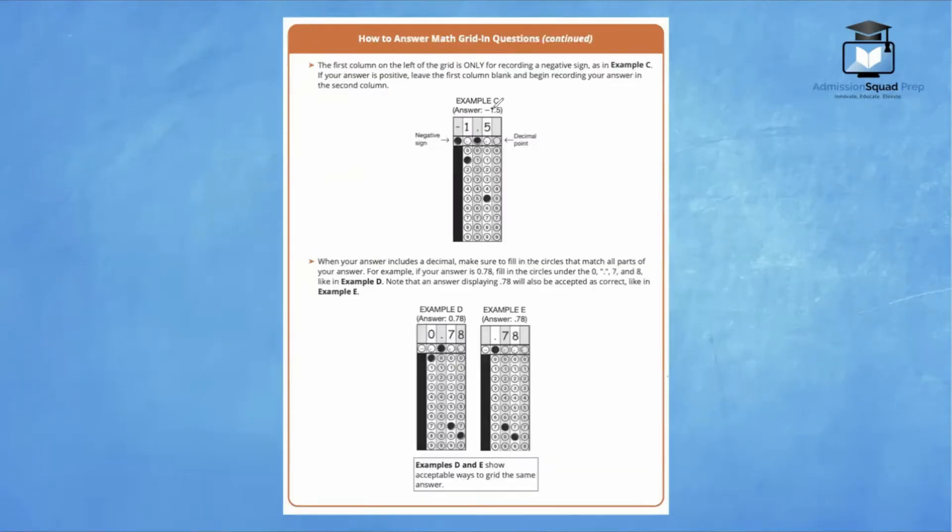The first column on the left of the grid is only for recording a negative sign, as we discussed. So take a look at example C. If the answer is negative, you will write in the negative right here. If your answer is positive, leave the first column blank and begin recording your answer in the second column.